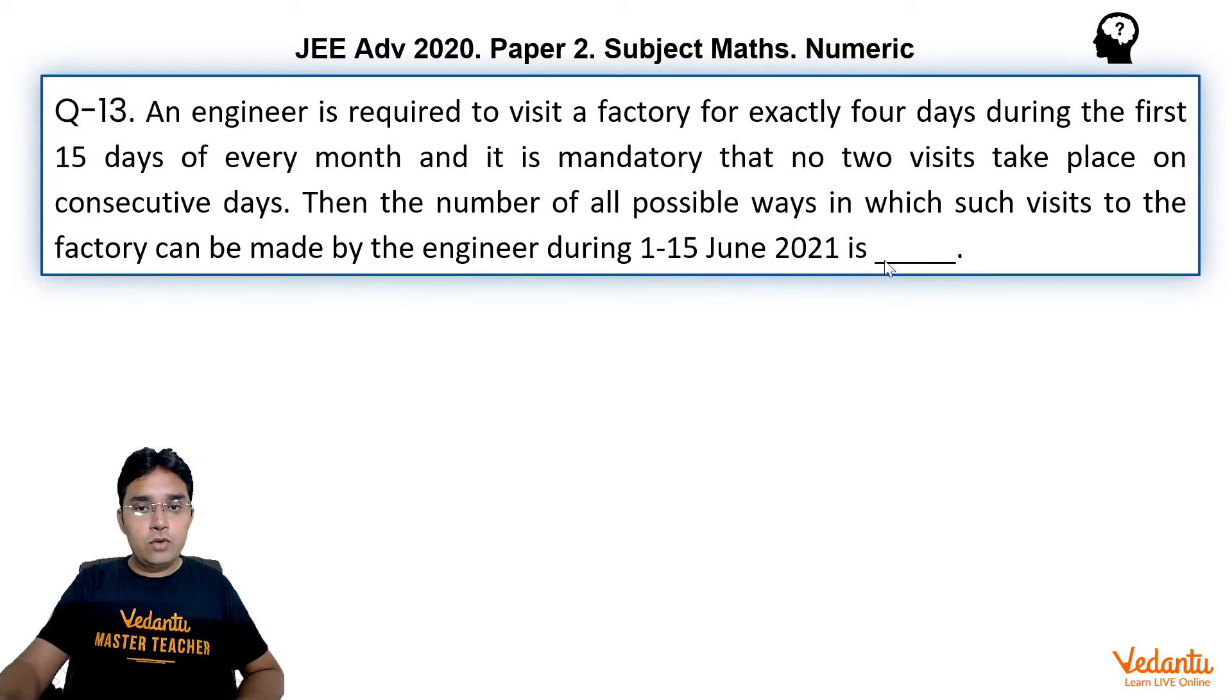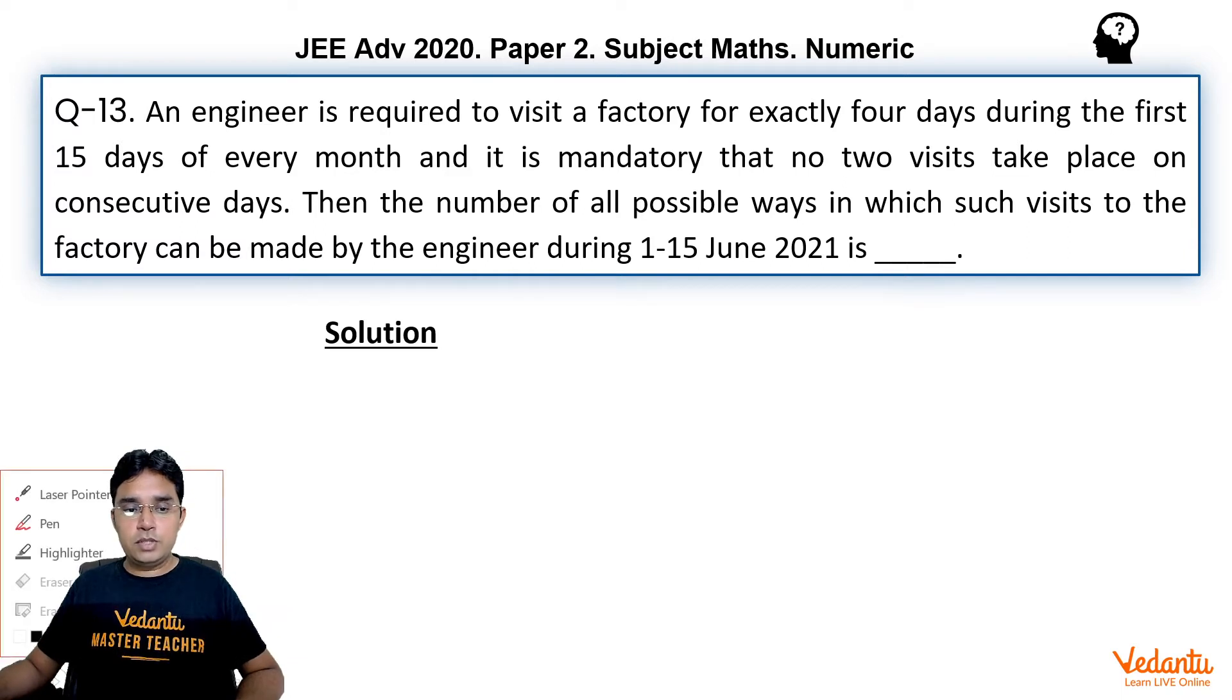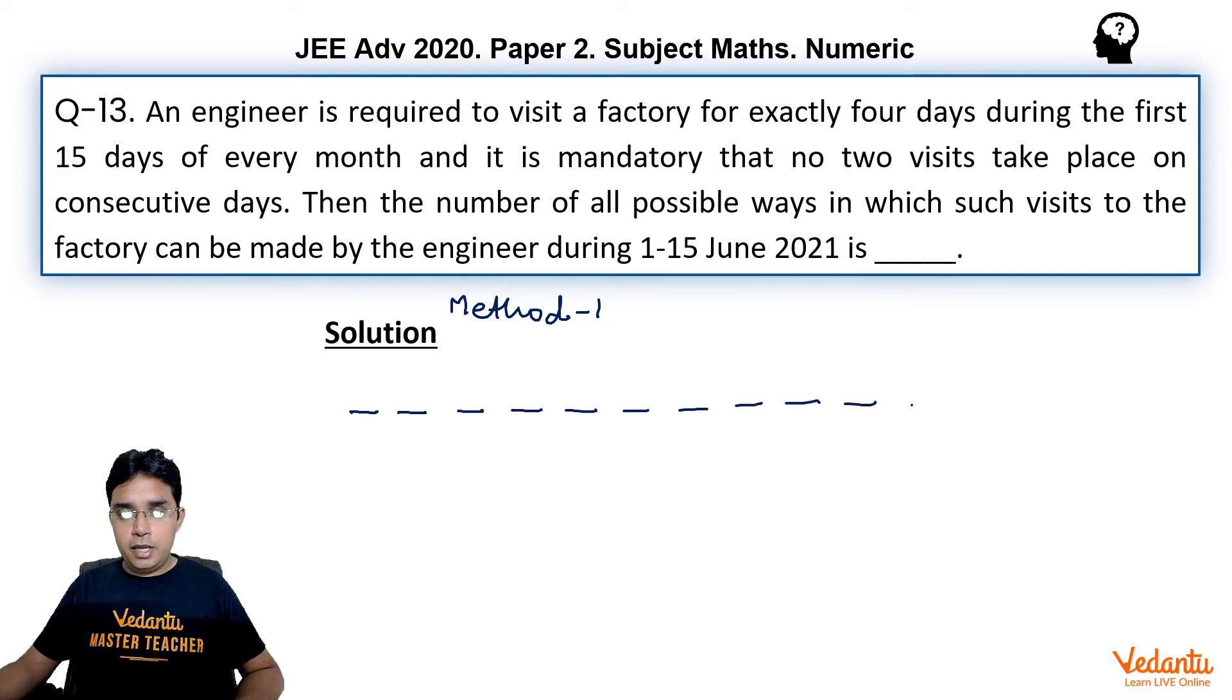Let us see how to solve this. I have actually two methods to solve this question. One is gap method. Let us see what is that gap method. So we have 15 days. Let me write them in a row: 1, 2, 3, 4, 5, 6, 7, 8, 9, 10, 11, 12, 13, 14, 15. So we need to select 4 days. Let me write S on those 4 selected days: 1, 2, 3, and 4. And those days which are not selected, let us call them as N.